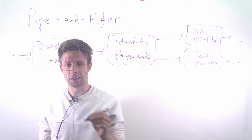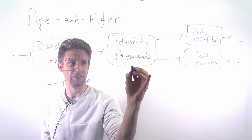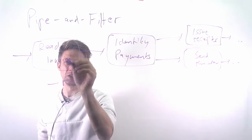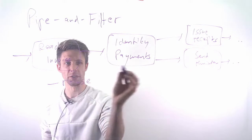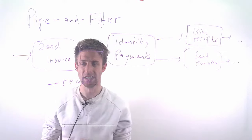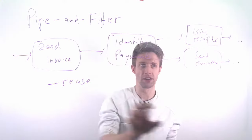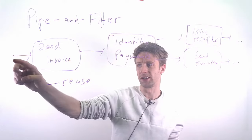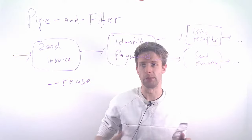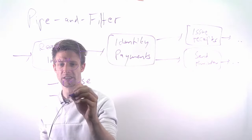Now what's good about this architecture is that in theory at least you can reuse the filters, the transformations. So maybe at a later point you again need to read an invoice. For example, you figure out that the payments might actually be connected to another invoice. So maybe here you want to again read invoice. You could just reuse this because your pipe, your data format should remain the same so it doesn't change that much. So that's very good.